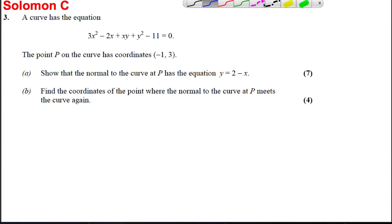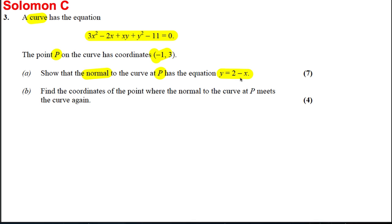Here's another implicit differentiation question. We have a curve — this is the equation of the curve. A point P on the curve has the following coordinates, and we're asked to show that the normal to the curve at P has the following equation. Then we're asked to find the coordinates of the points where the normal meets the curve again. So let's have a go at part a — as always, we differentiate both sides with respect to x.